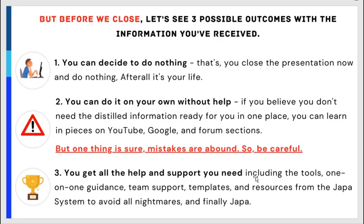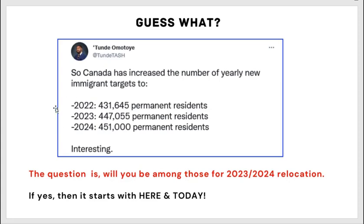Number three: you get all the help and support you need — tools, one-on-one guidance, team support, templates, and resources from the Japa System to avoid all nightmares and finally Japa to Canada via the study visa route. Canada has increased its yearly new immigrants target: in 2022 they want 431,000 permanent residents; 2023 will be 447,000; and 2024 will be 451,000. If you want to be included in 2023 or 2024, the journey starts now — apply early.